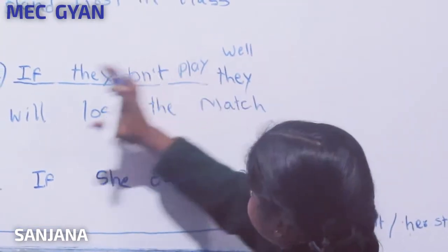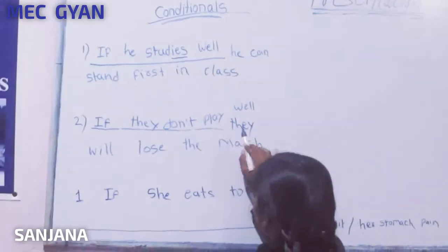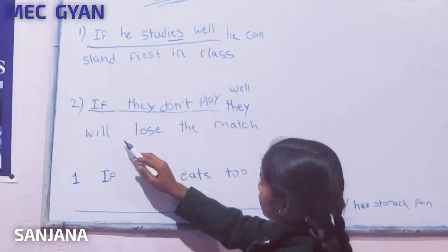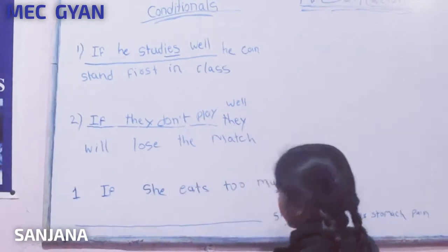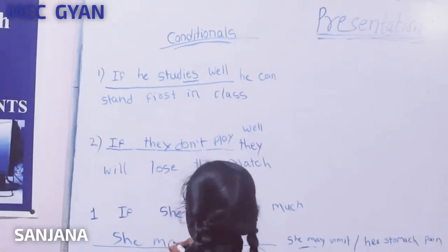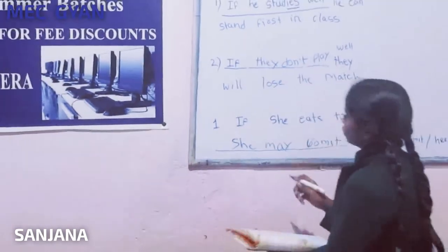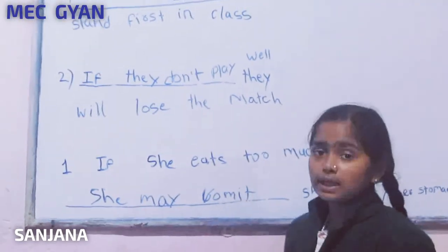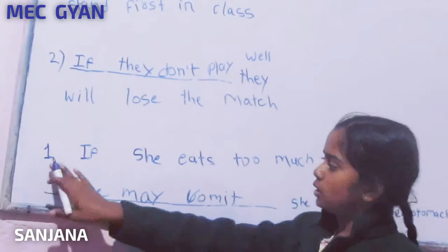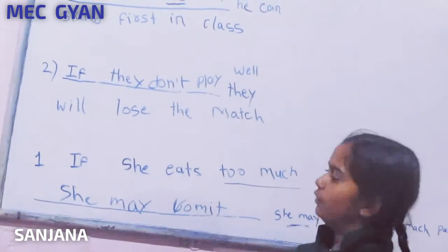So we have to use: if they don't play well, they will lose the match. Now here, if she eats too much — we don't know how much she is eating, but it shows she is eating very much, out of limit — so she may vomit.